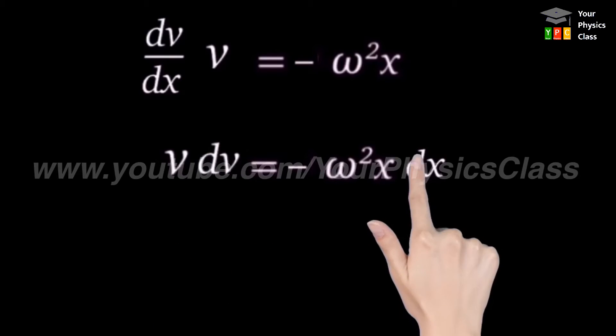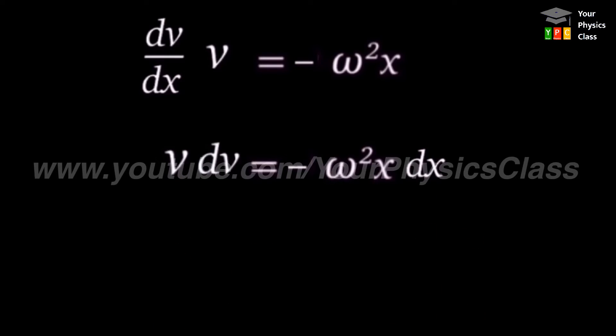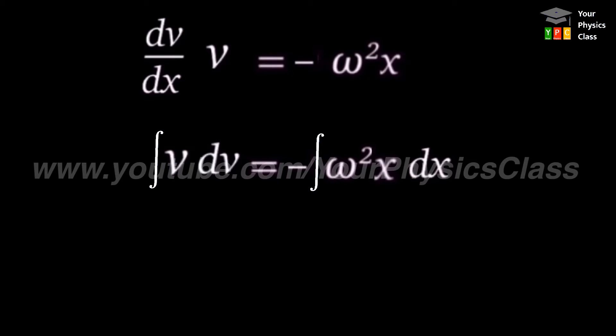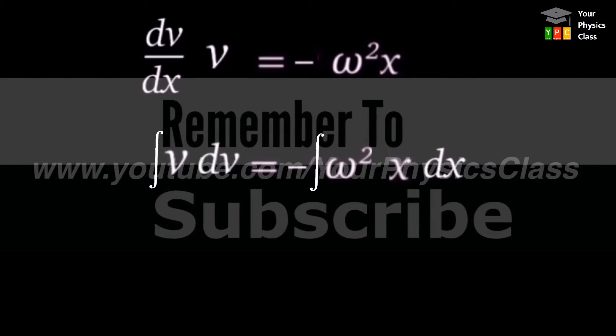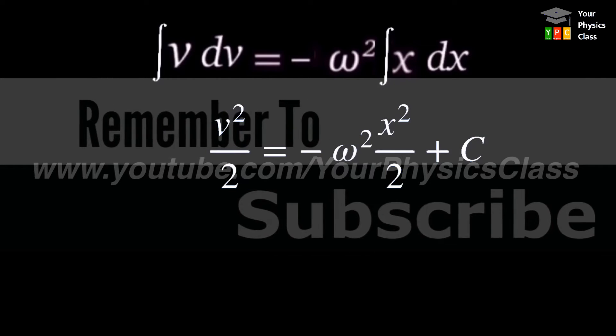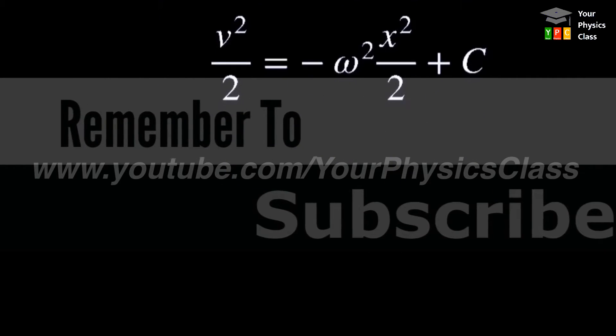Here we have a derivative, and to eliminate it we need to integrate — remember, integration is the enemy of differentiation. If you want to cancel a derivative, integration is necessary. Here omega squared is a constant, so we take it outside the integration sign. After integrating both sides, we get v²/2 equals minus omega squared x²/2 plus c. This is equation number 2.